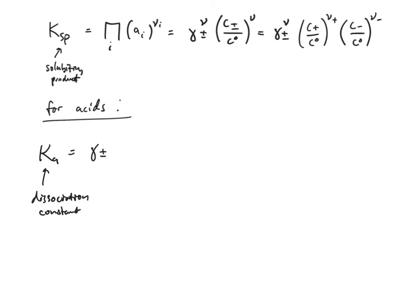And this equals our activity coefficient squared, the molality—we're back to molality again—of H-plus times the molality of A-minus, and A-minus is the acid anion, all over the molality of the intact acid.